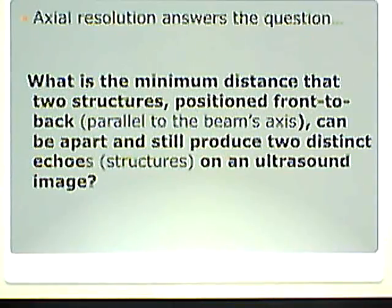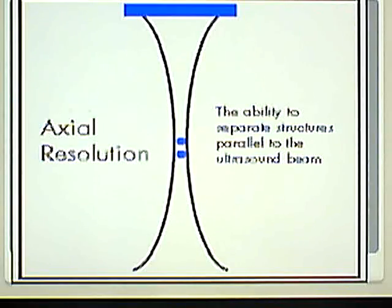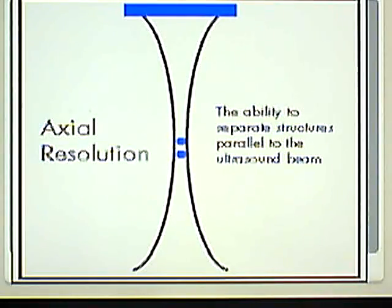That minimum distance is how close two structures can get while still producing two distinct echoes — two separate objects. This picture shows the ability to separate structures parallel to the ultrasound beam. The transducer is represented by the thick blue line at the top. Ultrasound beams are naturally hourglass-shaped, going from top to bottom, and those blue dots are front to back to each other. Your book has wonderful examples of this, especially figure eight-two on page 112.